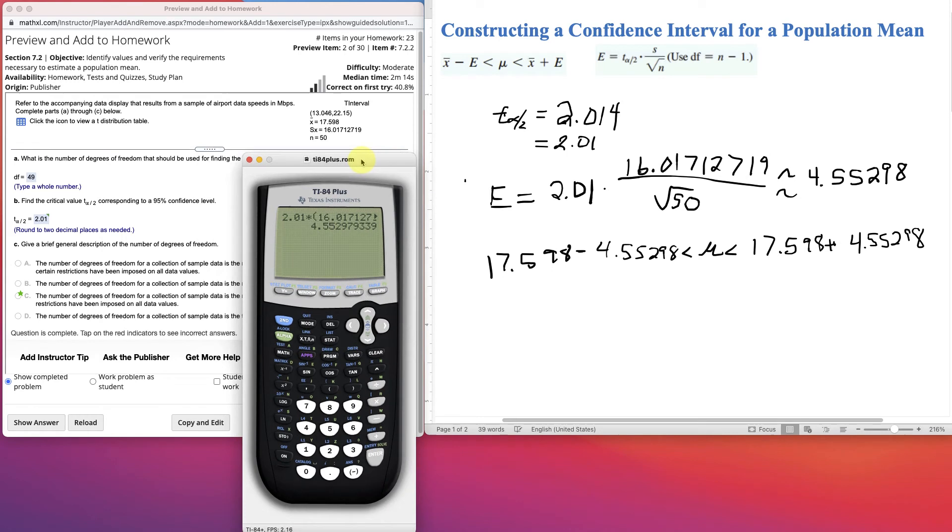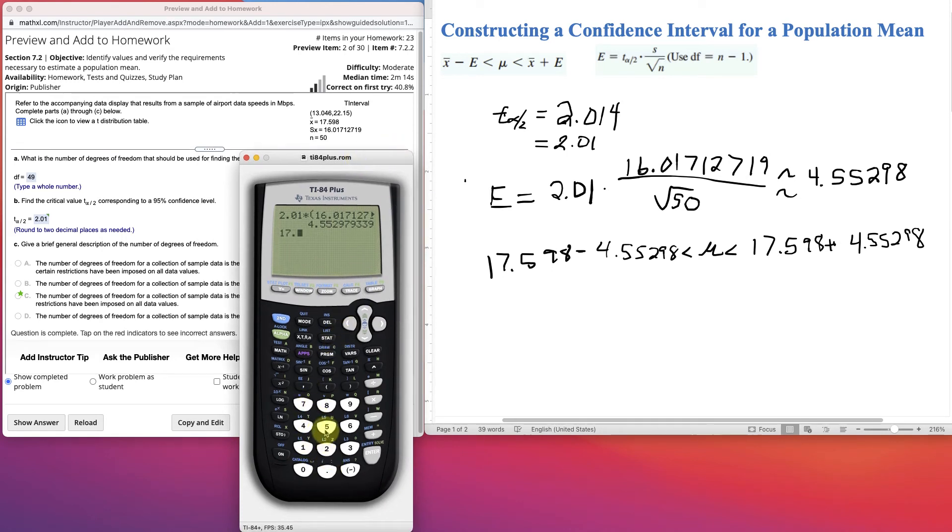Alright, let's use it in the calculator quick and see what we get. 17.598 minus 4.55298 equals, they did to 2 decimal places, or 3 decimal places, so that's what I'll do. 13.04502, and 17.598 plus 4.55298. 22.151, but they only did it to 2 decimal places there.